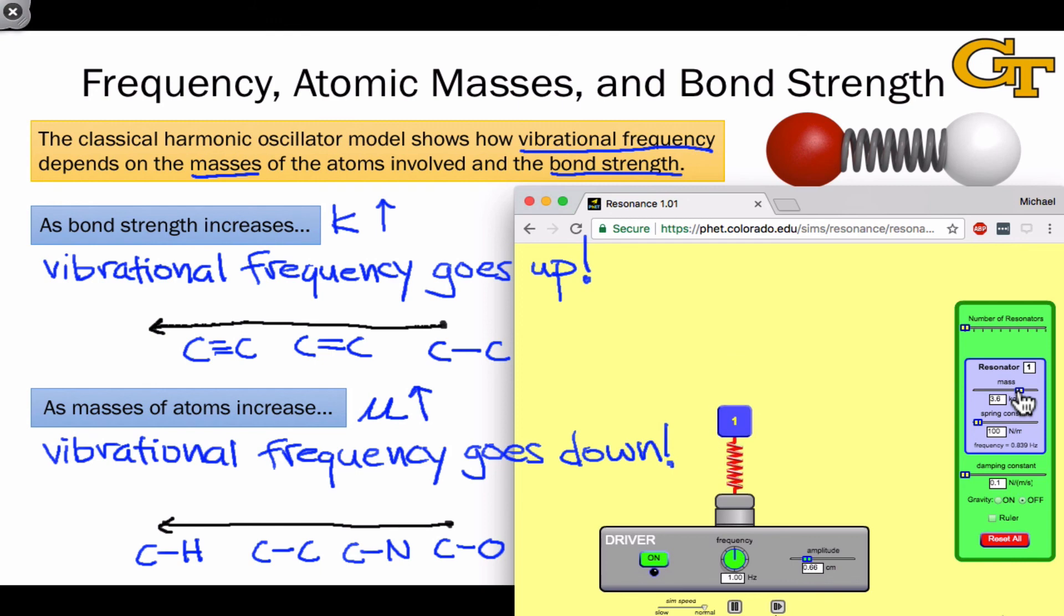In fact, we can also use this model to show the impact of the spring constant. So if I return the mass to about 2.5 kg, watch what happens when I alter the spring constant, increasing it to make the spring more stiff or the bond stronger. Notice that the vibrational frequency now has gone up considerably. If I lower the spring constant to make the spring looser or the bond weaker, the vibrational frequency slows down quite a bit. This is modeling the dependence of the vibrational frequency on k, the force constant, or as it's labeled here, the spring constant.